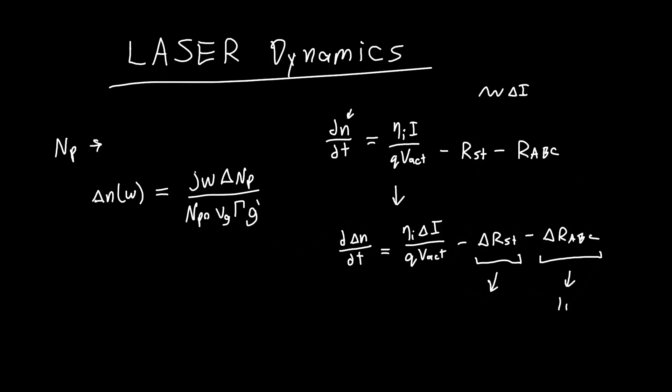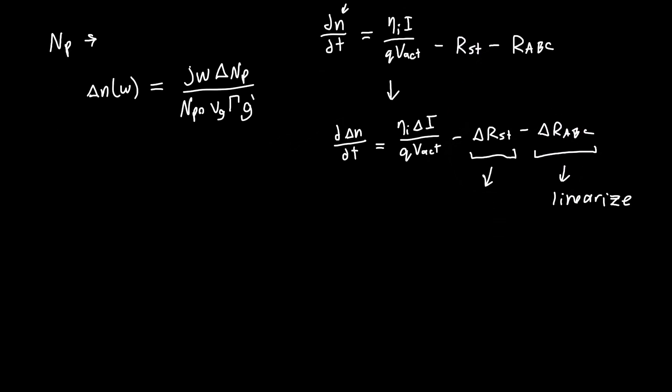In particular we're going to want to linearize this because we want all of our differential equations to be linear so that we can solve them and we can get a meaningful frequency response. Let's write out the ABC recombination rate. We know that it's just some coefficients or some Taylor series expanded up to the cubic term. This is our Shockley-Reed-Hall recombination, this is our spontaneous emission, and this is our Auger recombination.